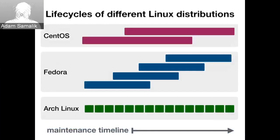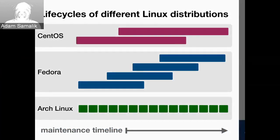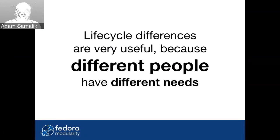Because there are many distributions out there, we can choose the speed we want. For example, Fedora is in the middle, releasing every half a year, which might be great for developers. CentOS releases every three years or so, which is maybe more suitable for servers. And then we have distributions like Arch Linux that basically don't have releases and just introduce new features all the time. This is really good because different people have different needs — developers tend to want newer versions, while system administrators want stability.